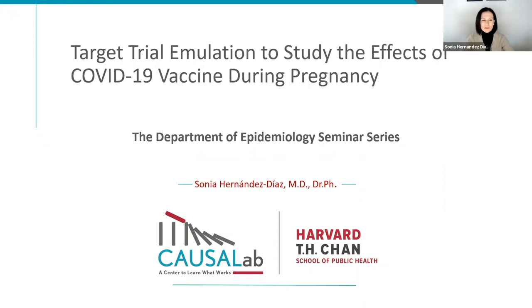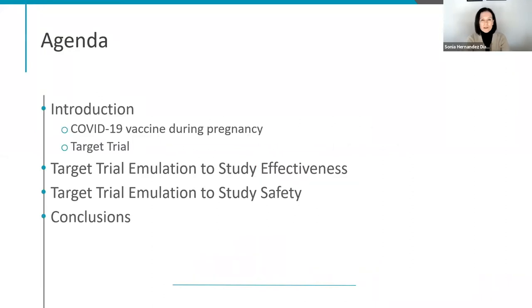I picked one example about COVID. So we are going to talk about how to emulate a target trial to study the effects of the COVID-19 vaccine during pregnancy. First, I'm going to give you a brief introduction about COVID vaccine in pregnancy and a brief introduction on the target trial, and then we're going to apply it specifically to how we can use it to study effectiveness and safety of the COVID-19 vaccine during pregnancy, ending with one slide of conclusions.